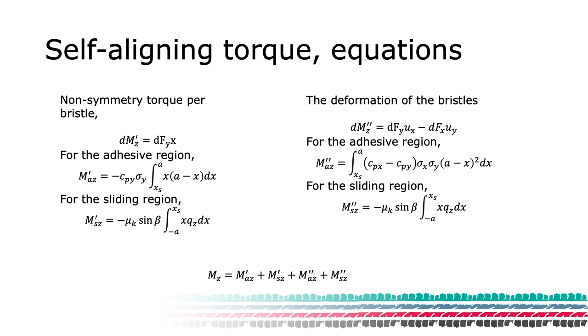The second mechanism is the bending of the bristles that we denote MZ bis. The contribution dMZ bis can be formulated as the sum of the bending in the lateral direction times the longitudinal force plus bending of the bristle in the longitudinal direction times the lateral force. The minus sign originates from the sign convention and the coordinate system. The MZ bis torque can be obtained by summing the part from the adhesive and sliding parts of the contact as for the other contributions.